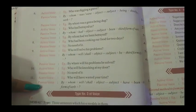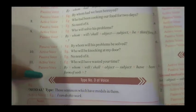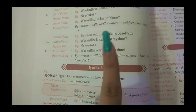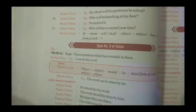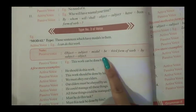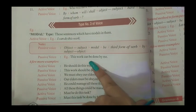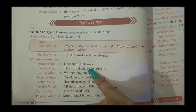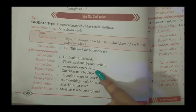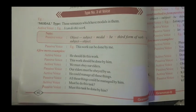Type 3 is the Modal type — sentences which have modals in them. For example: 'I can do this work' becomes 'This work can be done by me.' 'He should do this work' becomes 'This work should be done by him.' 'We must obey our elders' becomes 'Our elders must be obeyed by us.' We must form active and passive voice according to the modal used.